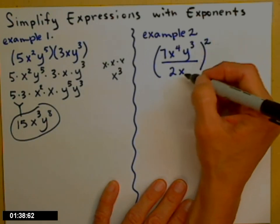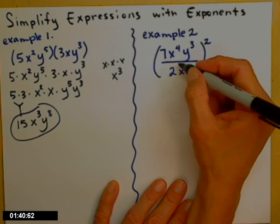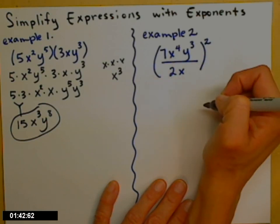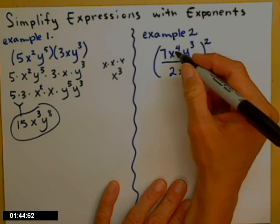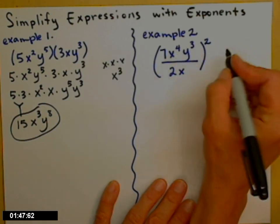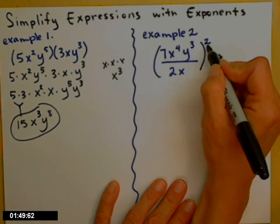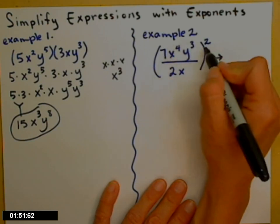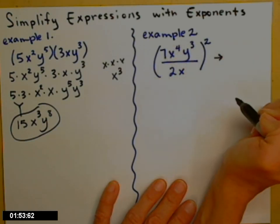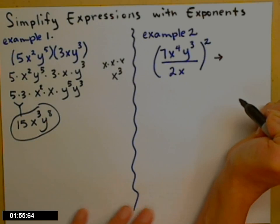A couple of different things you can do first. You might notice you have an x in the top and an x in the bottom. You could choose to simplify that part first. I'm not going to, but you certainly could. Instead, I'm going to go ahead and take this squared, and I'm going to apply it in to everything. And again, I will show you the nitty-gritty detail.